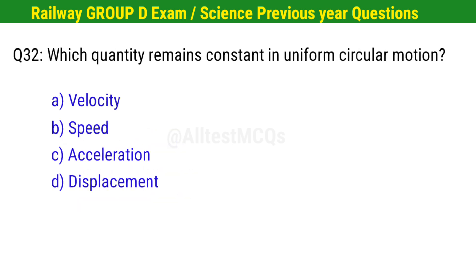Question No. 32. Which quantity remains constant in uniform circular motion? Right option is B. Speed.